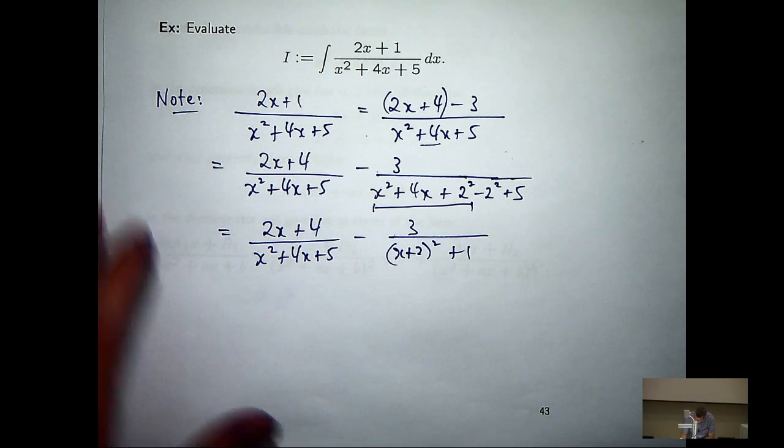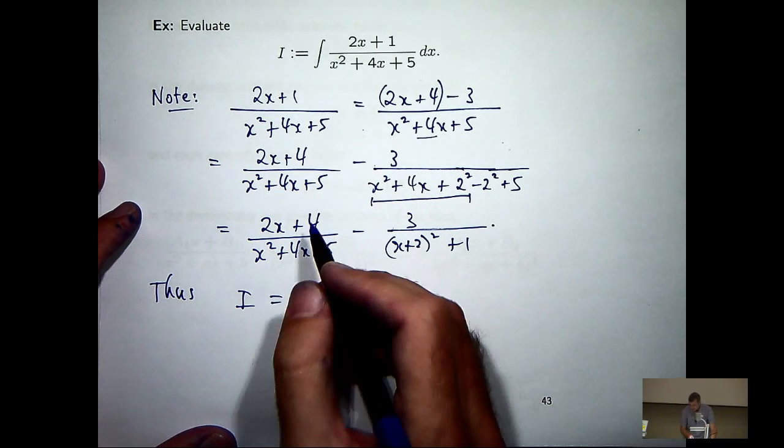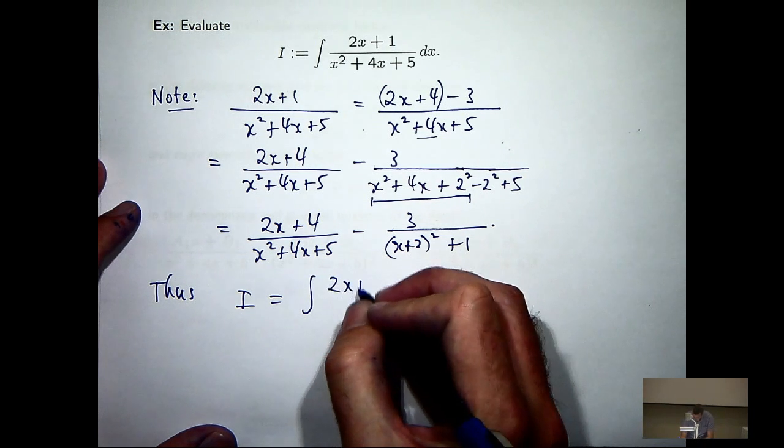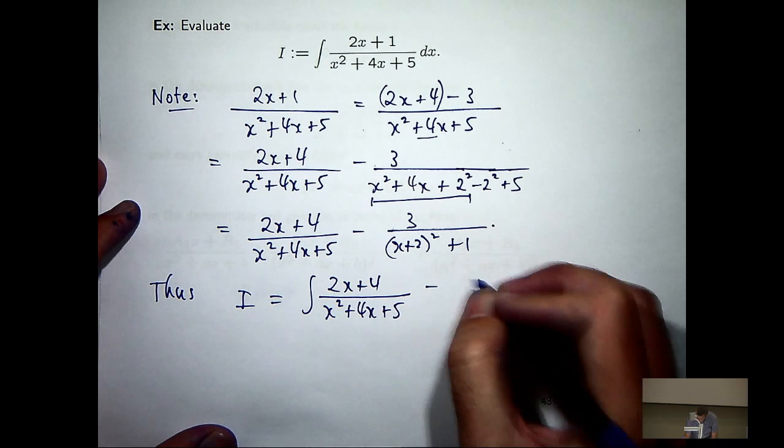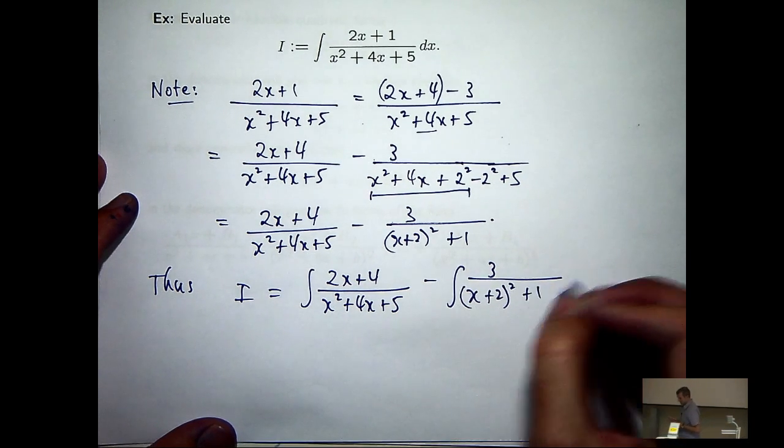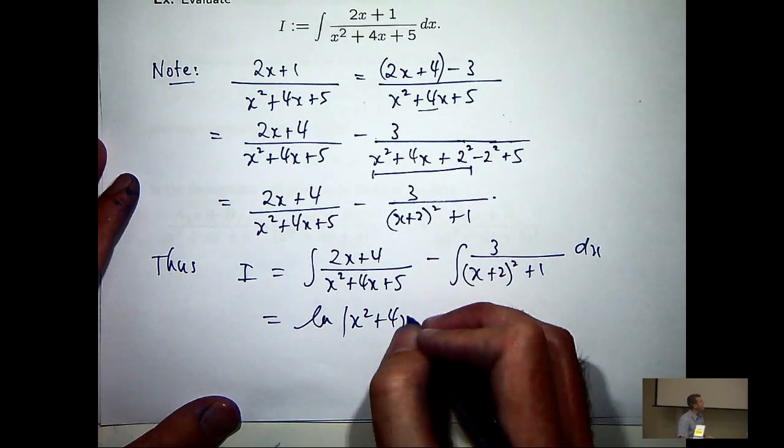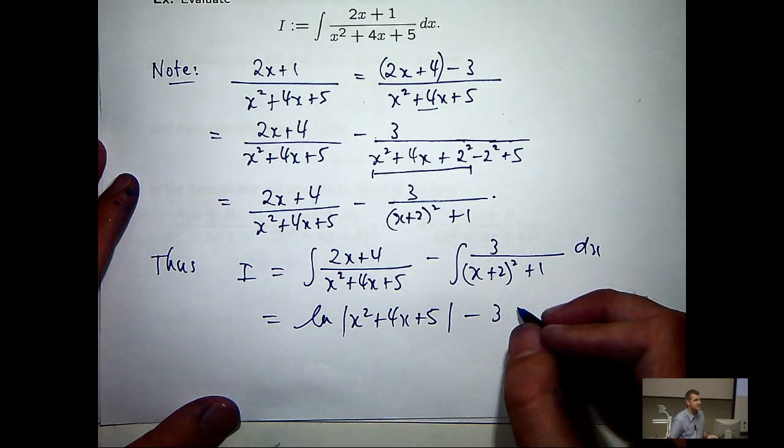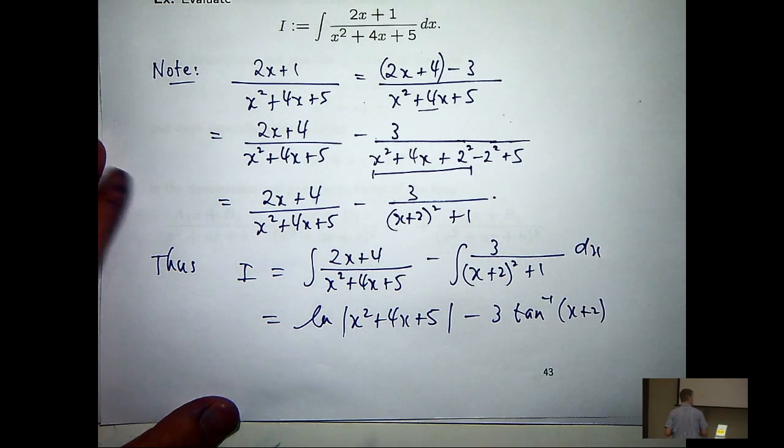Okay so the integral is going to be something like this. So the logarithm minus 3 times tan inverse x plus 2 plus a constant.